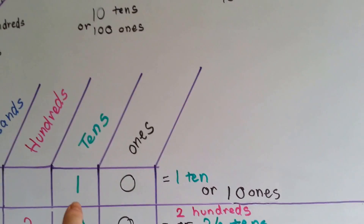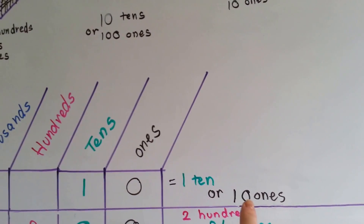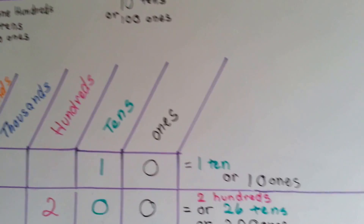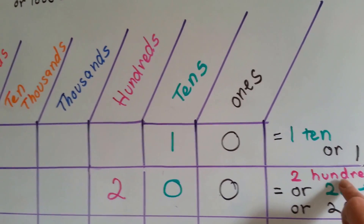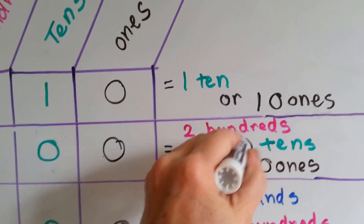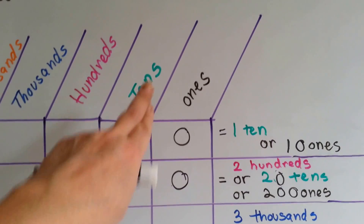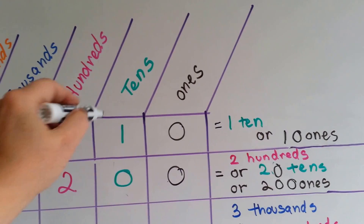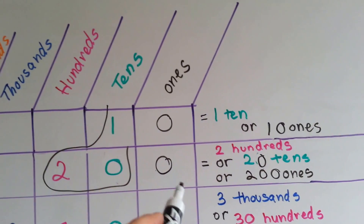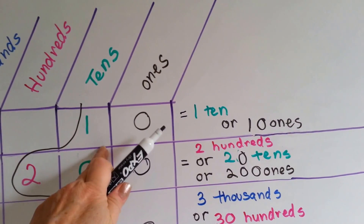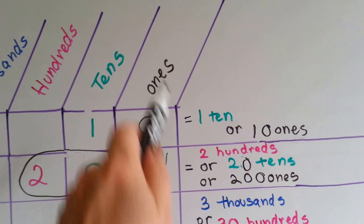The number ten means one ten and zero ones. Or, it could mean ten ones — ten pennies. Look at the number two hundred. It means two hundreds. Or, it means twenty tens. Two hundred is the same thing as saying twenty tens. We could also group this into the ones place and just say it's two hundred ones.